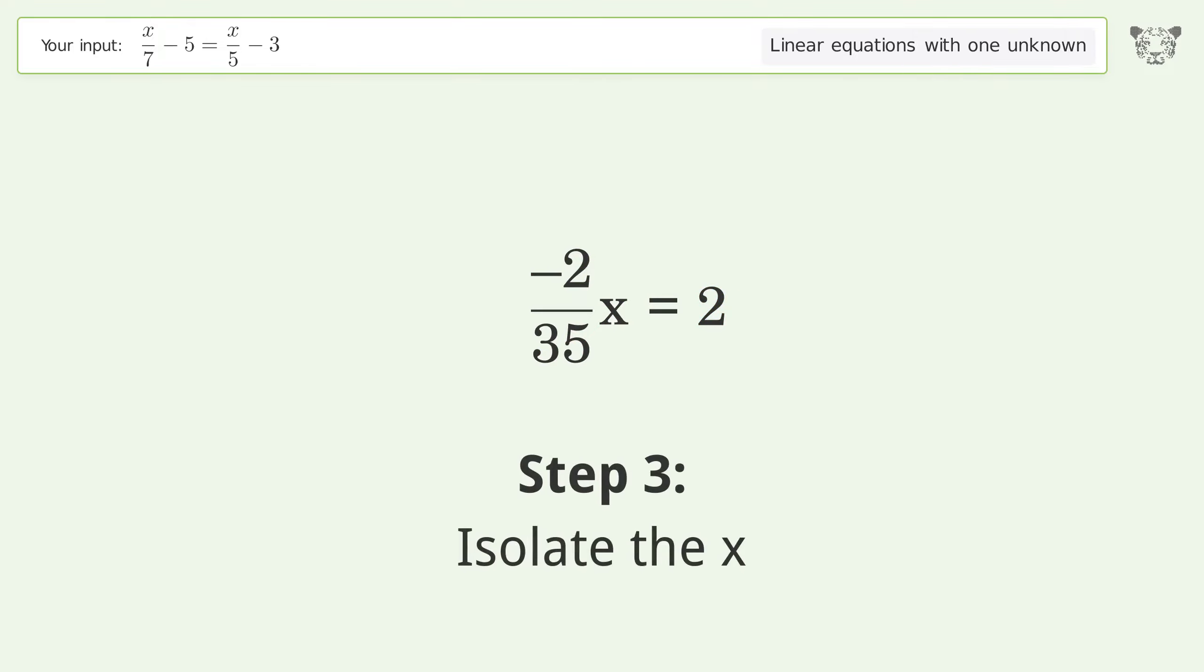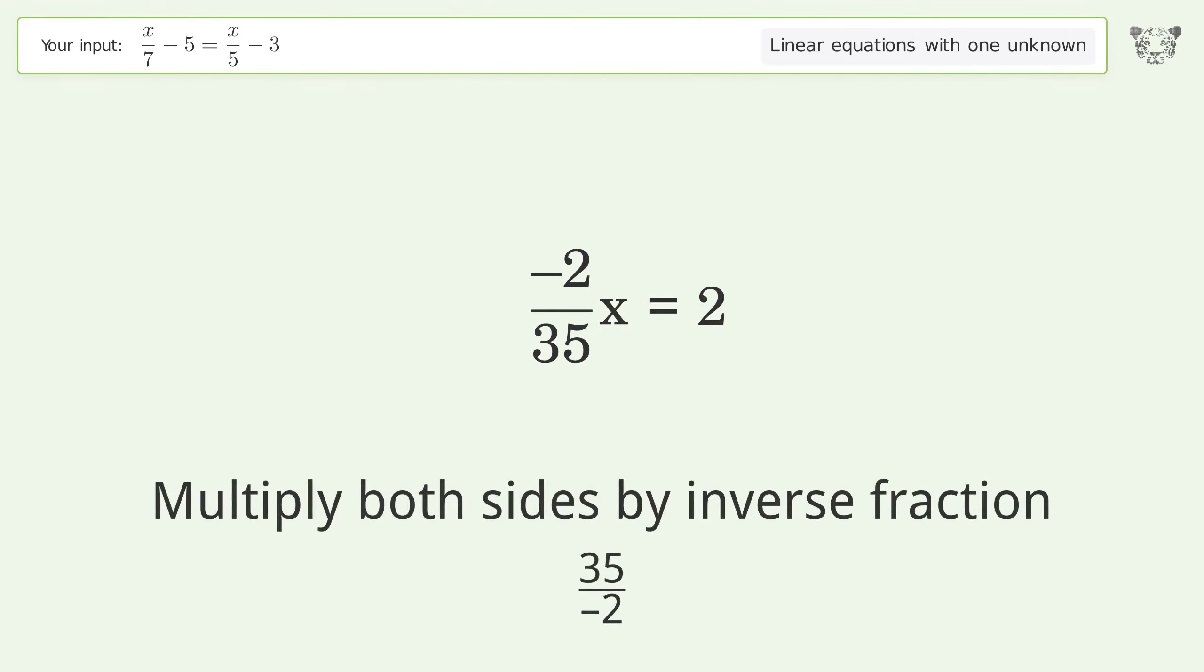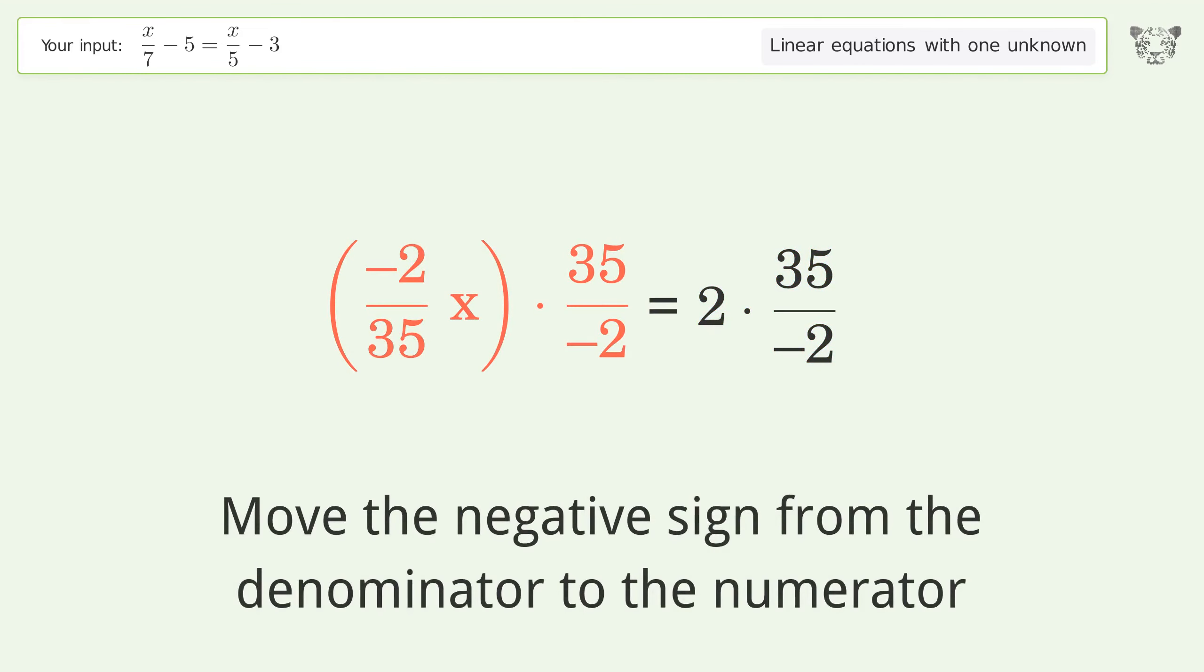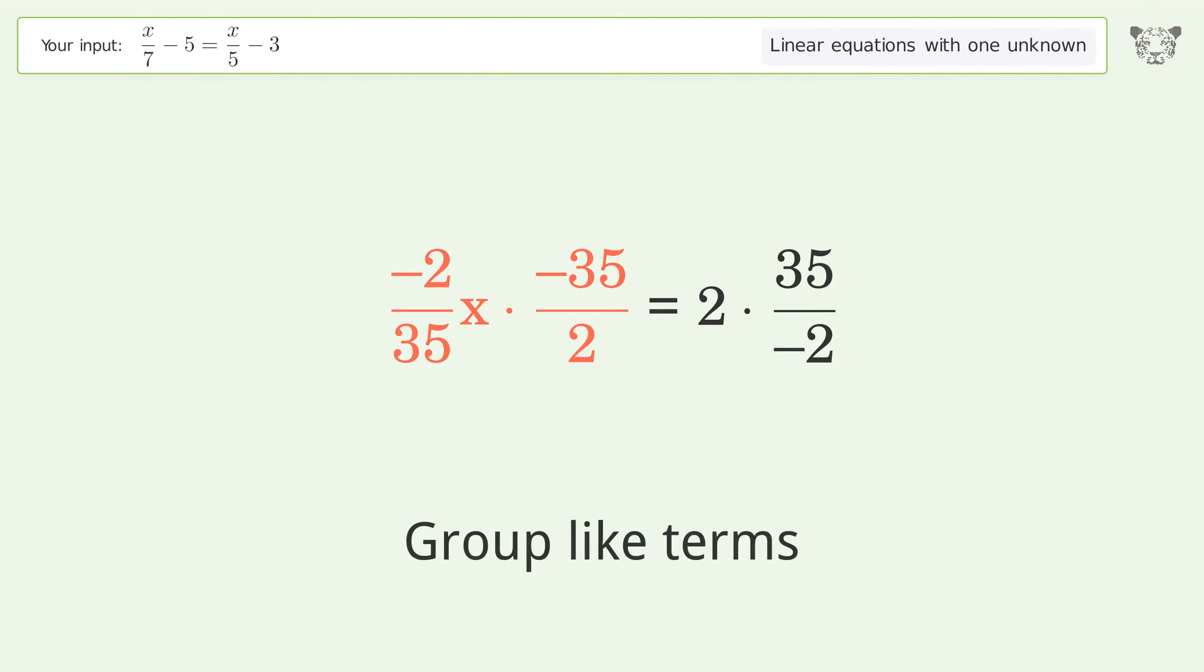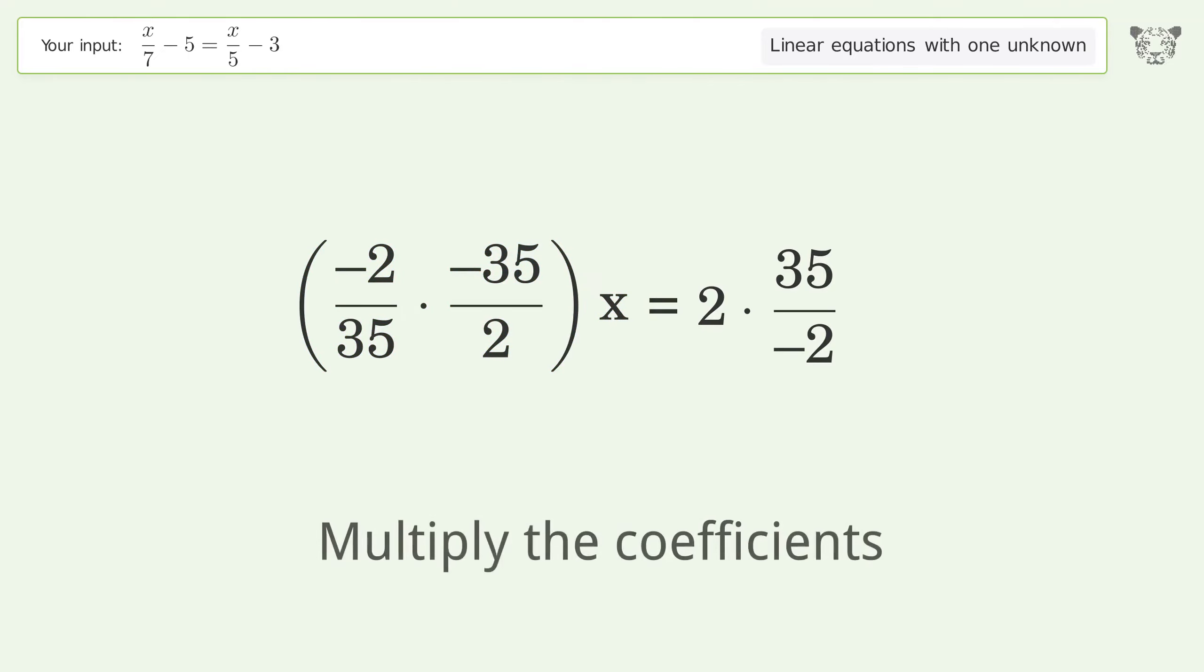Isolate the x. Multiply both sides by the inverse fraction, 35 over negative 2. Move the negative sign from the denominator to the numerator. Group like terms. Multiply the coefficients.